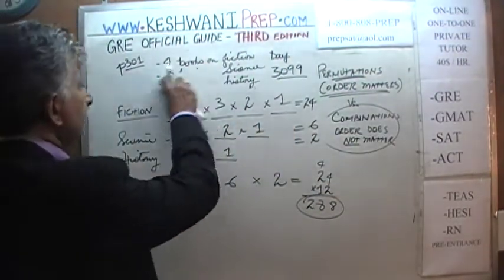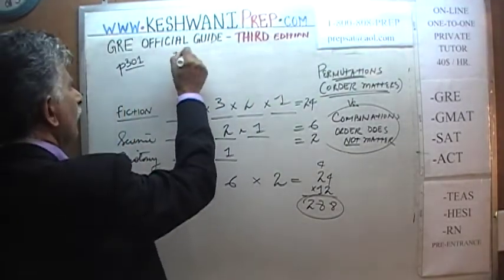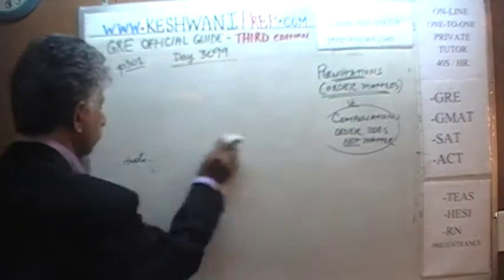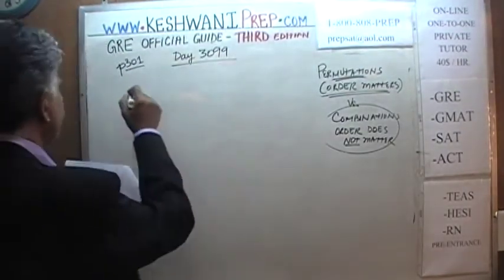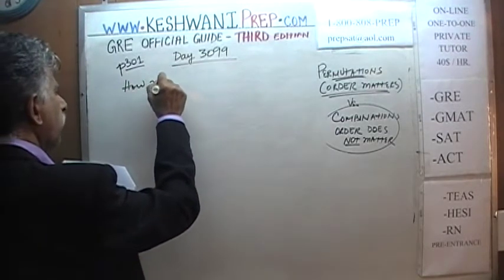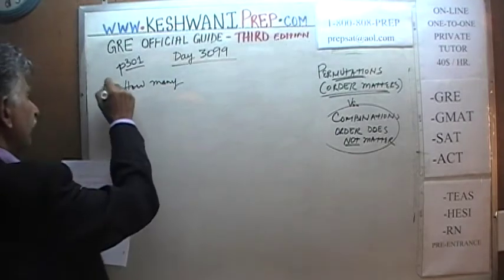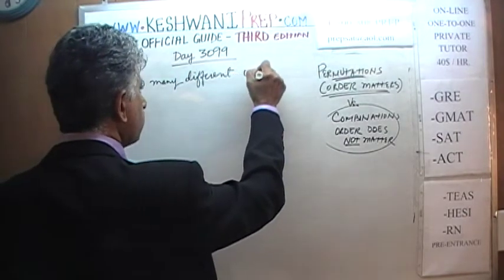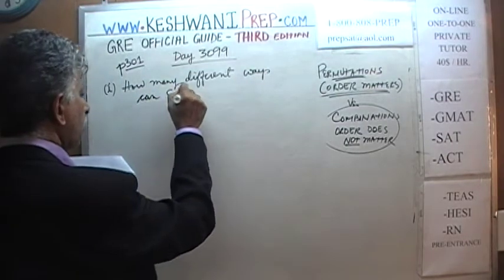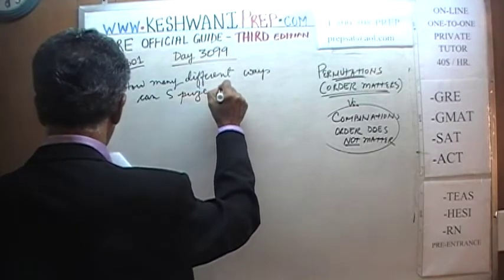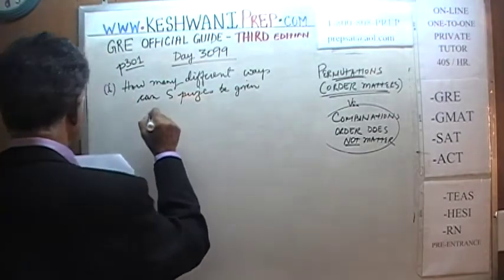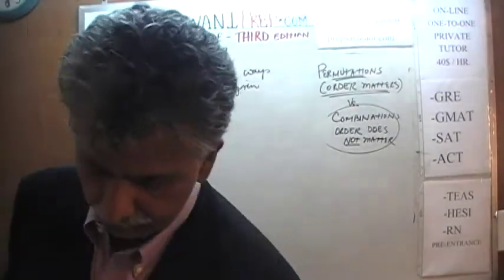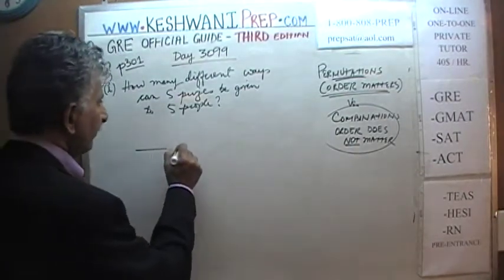Let's do the next one. These problems are going to be in parts, so let's call this part number one. How many different ways can five prizes be given to five people? Very simple, very straightforward problem — five prizes to five different people.